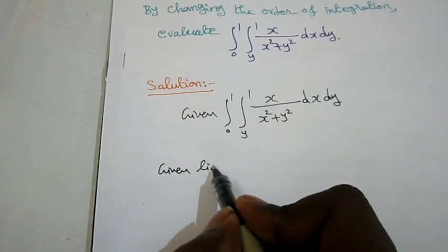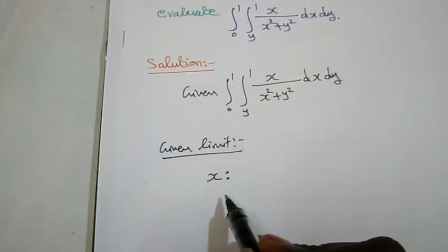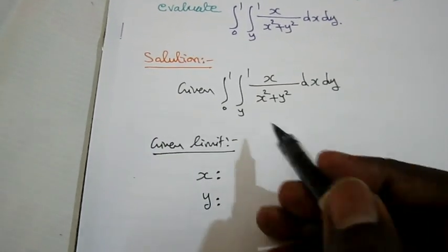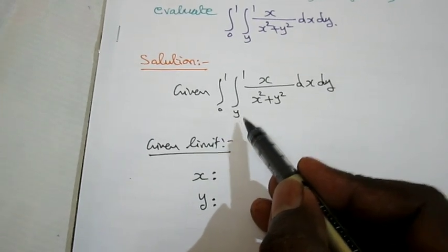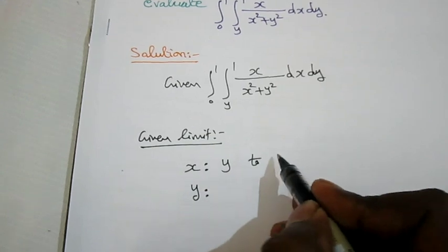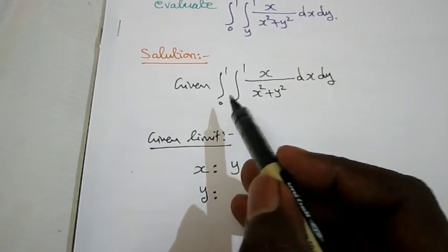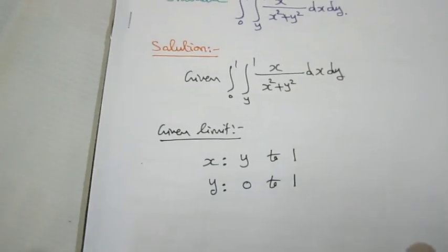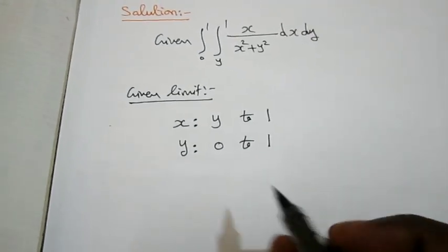So what are the given limits? The x limit and y limit. Here one of the limits contains the variable y, therefore it is the limit for x. So x limit is y to 1, and then obviously this is the limit for y, so it is 0 to 1.